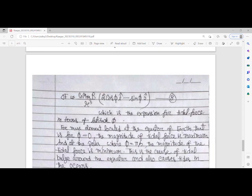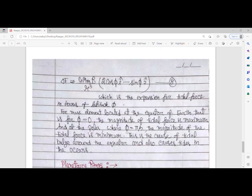This is the expression for tidal force in terms of latitude φ. For a mass element located at the equator where φ = 0°, the magnitude of tidal force is maximum. At the poles where φ = 90°, the magnitude is minimum.